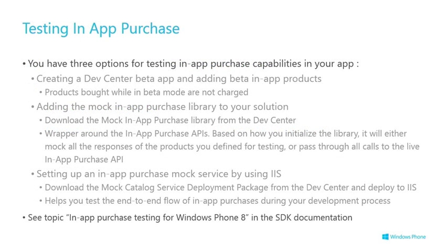How do you test all this? You've got three options for testing in-app purchase capabilities in your app. First, you can submit your app as a beta app and add beta in-app products. You can allow your app to be used by a named group of people running the app in beta mode — any purchases they make are not real purchases. You go through the whole process with products uploaded to the Windows Phone Store, all working exactly as it should, but no money changes hands. As an alternative, there's a library called the Mock In-App Purchase Library, which you can download from the Dev Center.